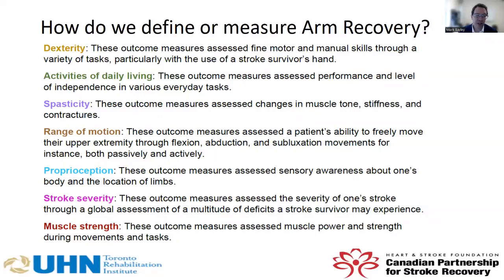Other ways of measuring arm recovery include activities of daily living — outcome measures that assess performance and independence in various everyday tasks such as dressing or feeding yourself. Spasticity is another problem with arm recovery, and measures such as the Ashworth Spasticity Scale look at changes in tone, stiffness, and contractures.